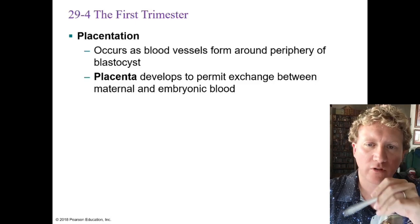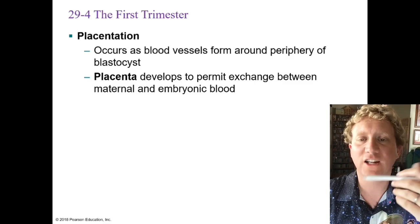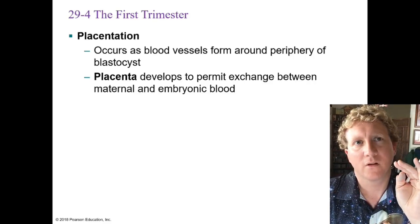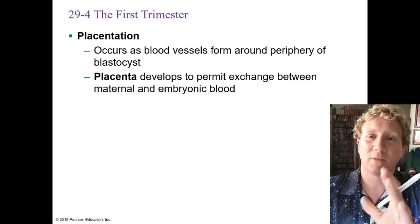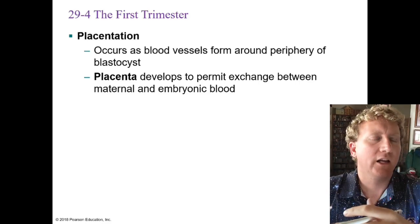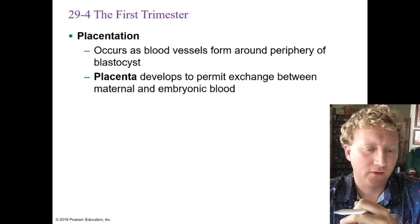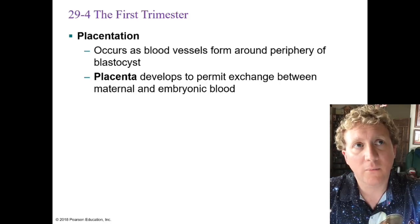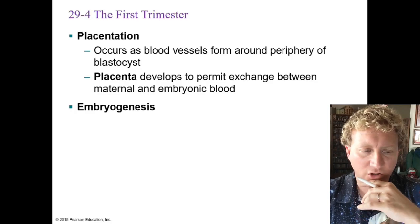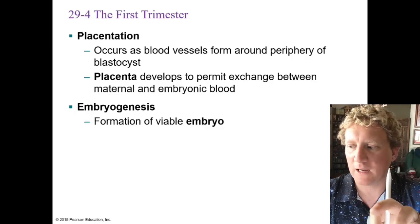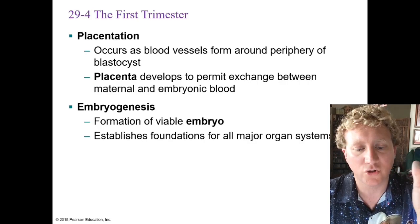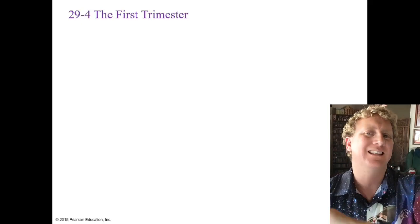Blood vessels around the blastocyst form and eventually become the placenta — the exchange tissue between mom and baby. Interestingly, the placenta also signals mom's immune system to stand down — essentially telling it that everything is fine — because otherwise mom's immune system would view the baby as a foreign invader and try to kill it. Once the placenta develops, you have embryogenesis — the formation of a viable embryo — and tissue layers develop that will become all the major organ systems.